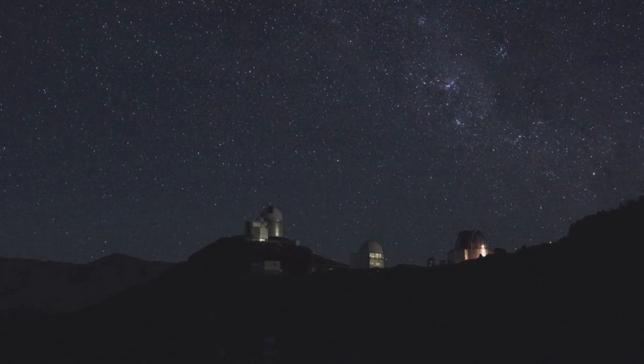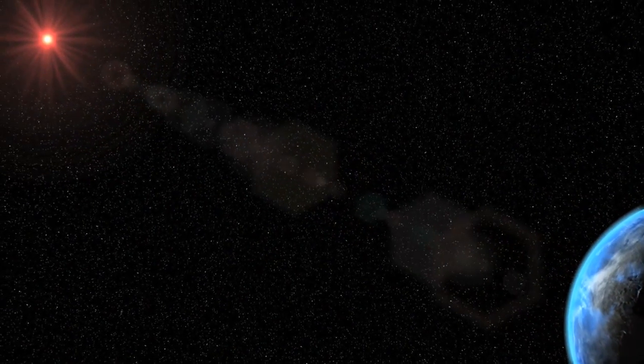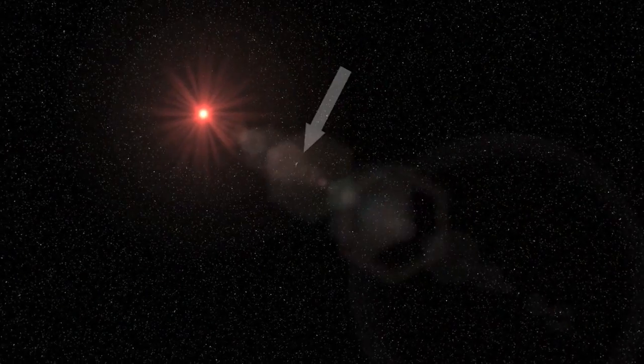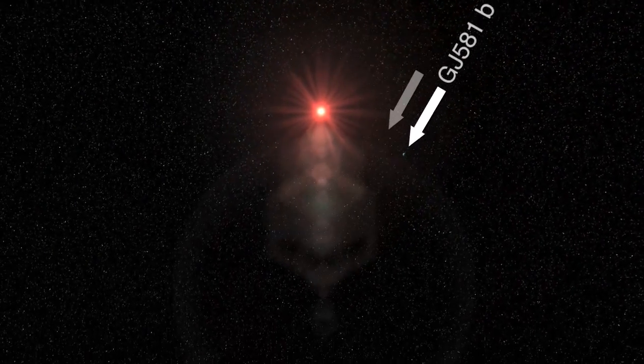From previous observations, also done with the HARP spectrograph at ESO's La Silla Observatory and announced two years ago, this star was known to also harbor a system of three super-Earth planets. With Gliese 581e, the planetary system has four known planets.